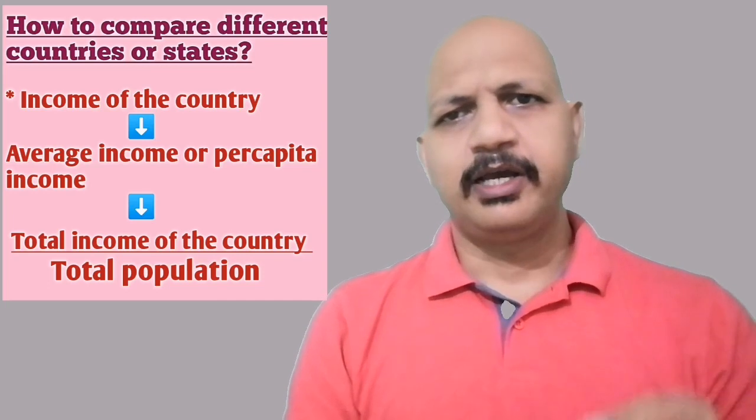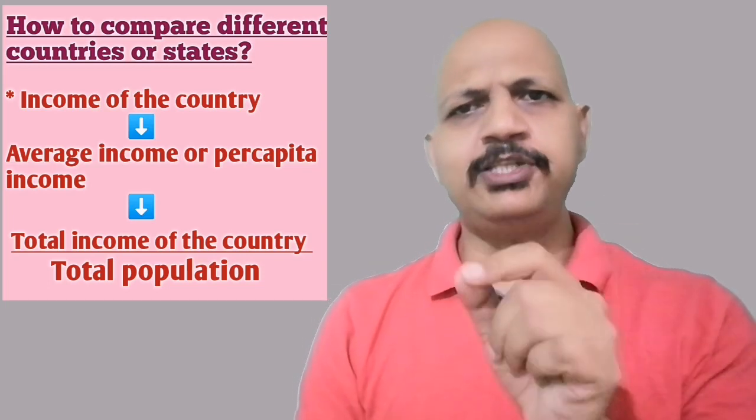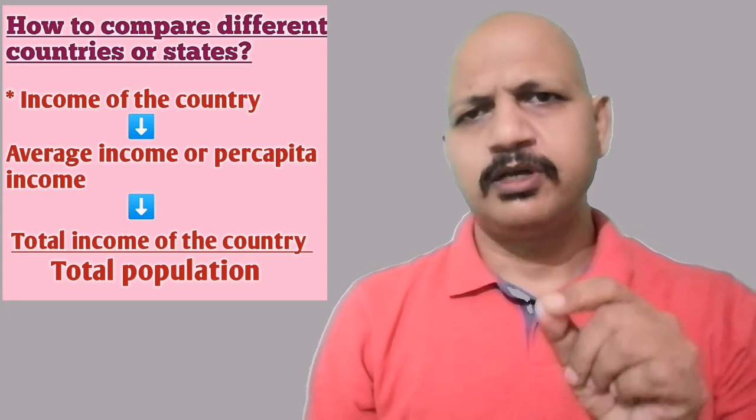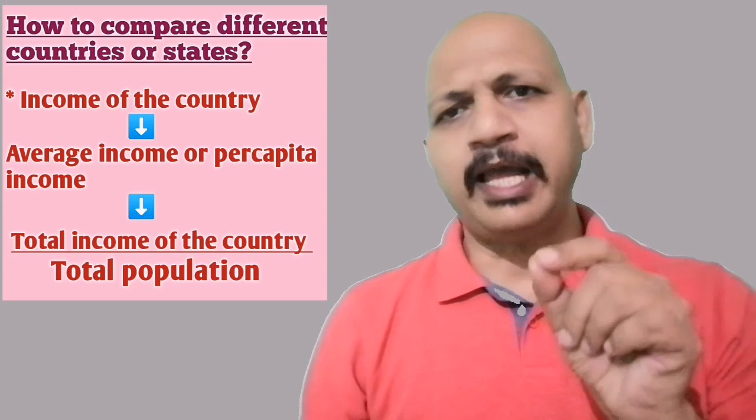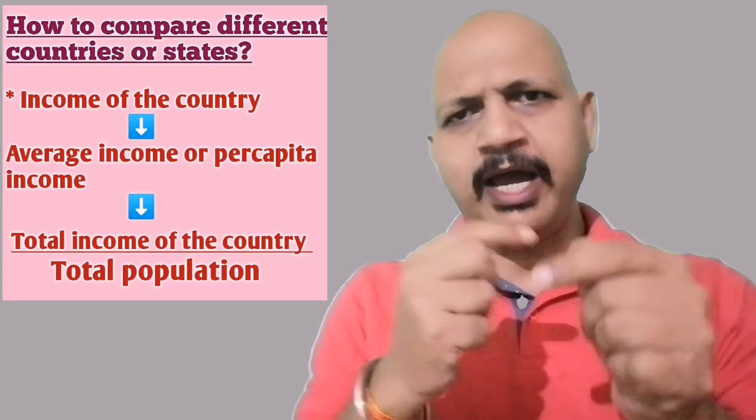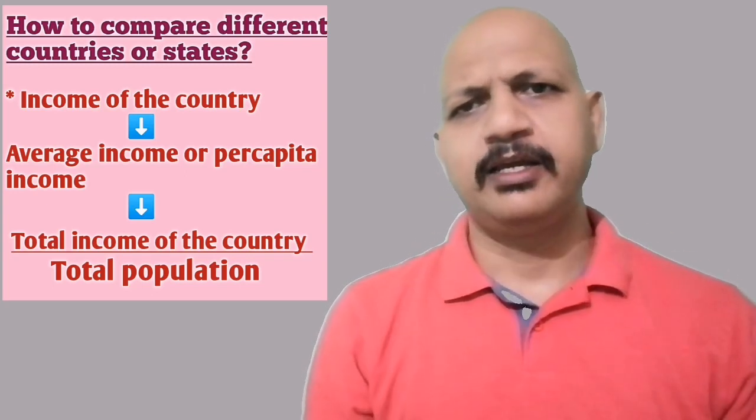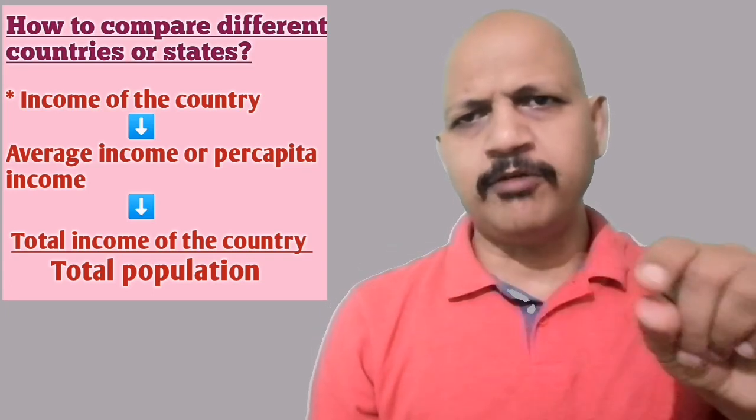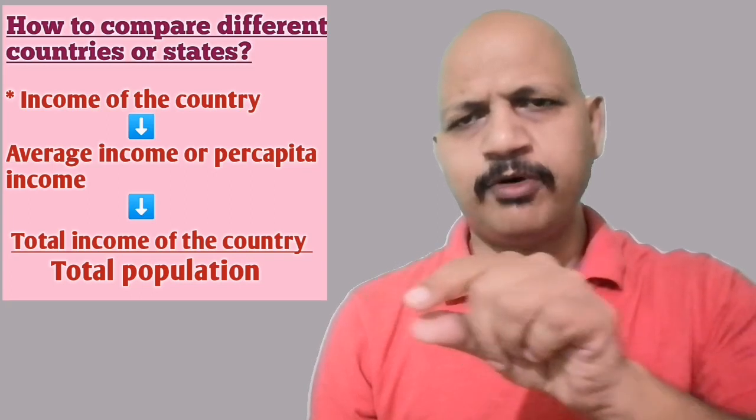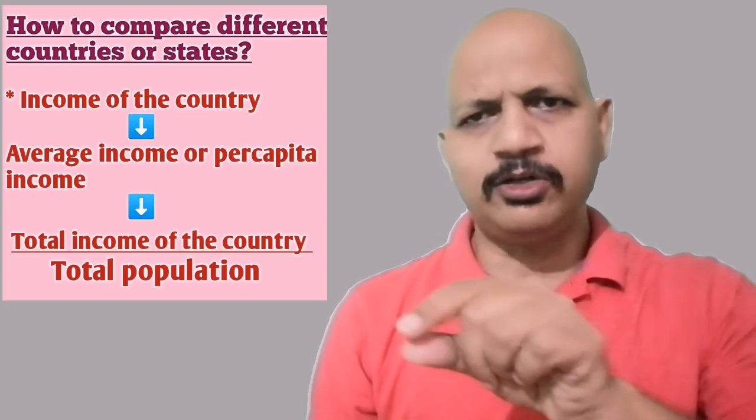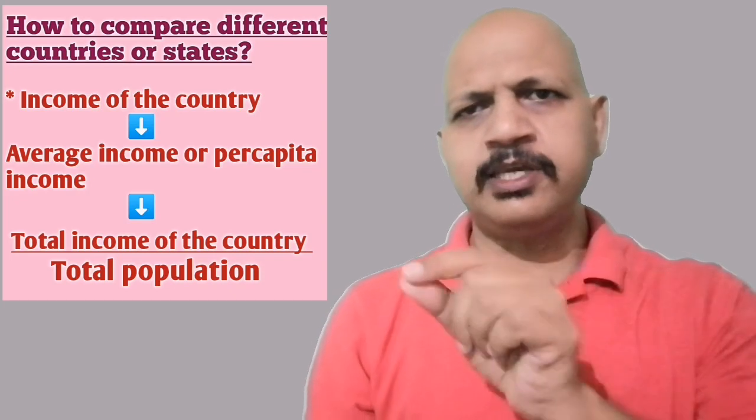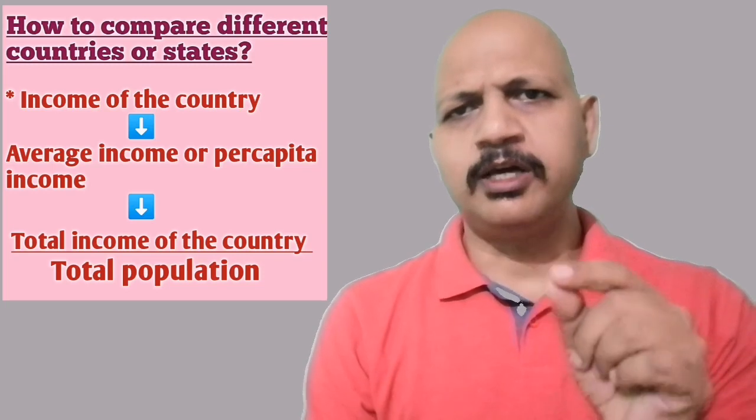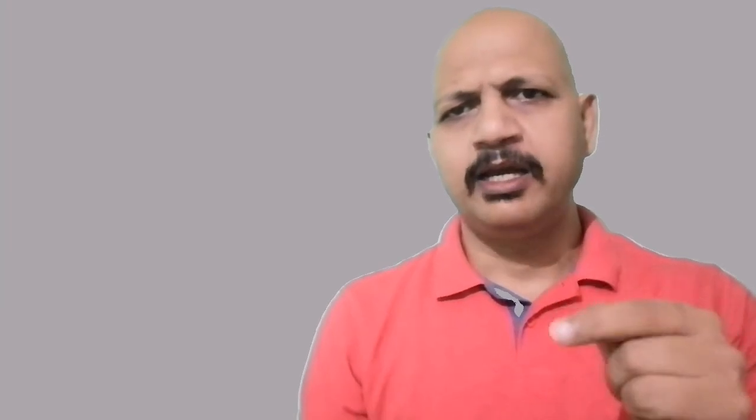What can we do instead? We can use the average income. The average income will give us an idea as to what each person in a country is likely to earn. The average income is calculated by dividing the total income of the country by the total population. This gives us a figure known as average income, and it is also called the per capita income or Prati Vyakti Aay.